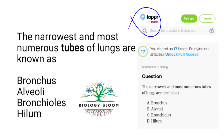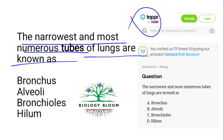Taken from Topper: the narrowest and most numerous tubes of the lungs are known as — alveoli? No, alveoli are not tubes, they are sacs. The correct answer is bronchioles. Bronchioles are the narrowest as well as most numerous tubes in the lungs.